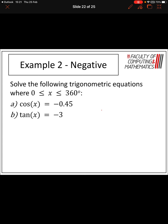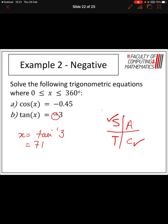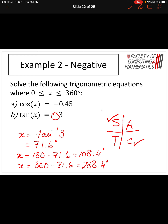Let's look at tan x is equal to negative 3. Again, this negative never goes into my calculator. When tan is negative, I want an answer in the second quadrant and the fourth quadrant. So x equals tan to the minus one of 3, which gives 71.6 degrees. I don't want that answer but I need it to find the two answers I do need. To get into the second quadrant, I do 180 minus 71.6, and for the last quadrant, I do 360 minus 71.6. My first answer is 108.4 and my second answer is 288.4 degrees.